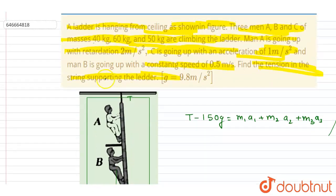So B is moving up with constant speed, so the acceleration of that is 0. So I will write down the mass of A and acceleration of A. Mass of A is 40, acceleration of A...